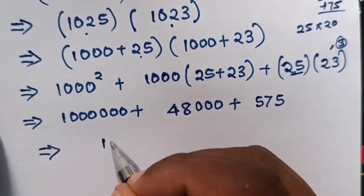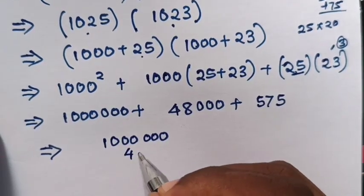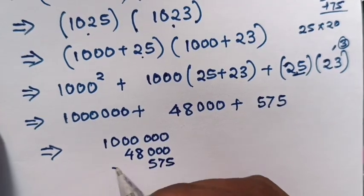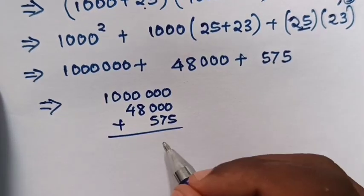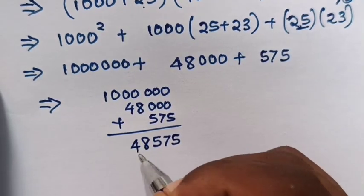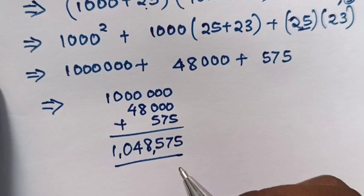So we add this together: 1 million plus 48,000 plus 575 equals 1,048,575. This is the answer.